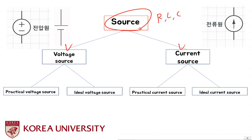A voltage source in an electric circuit is an element that provides a predetermined voltage drop across its terminals. It provides a constant voltage. We typically have two schematic symbols for a voltage source. The first one looks like this, and another symbol you'll see quite often is a circle with a plus and minus in it.